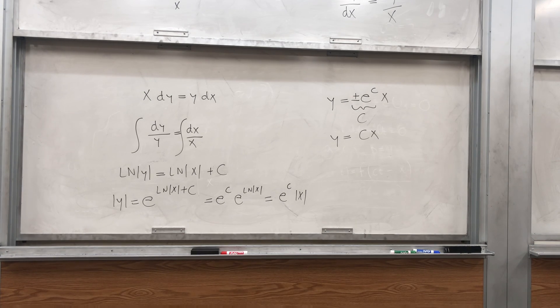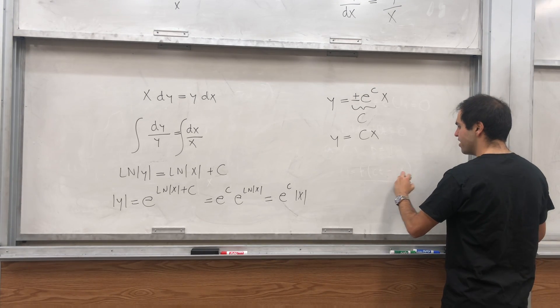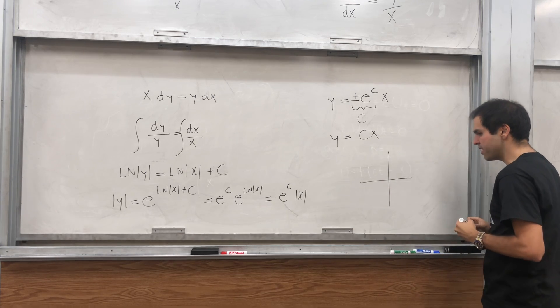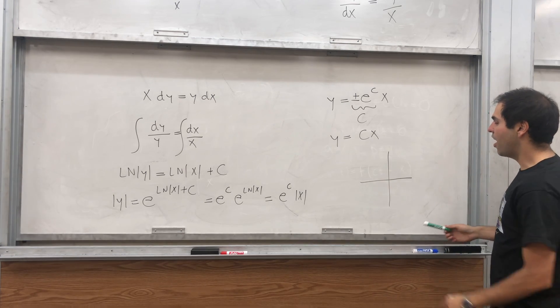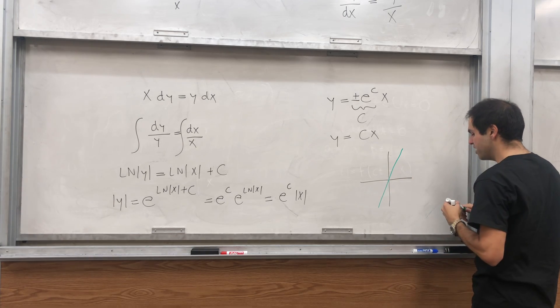In other words, what's happening here is that y is still constant on lines, but sorry, u is still constant on lines, but it seems that this time the constant is the slope.